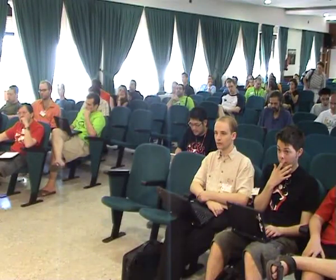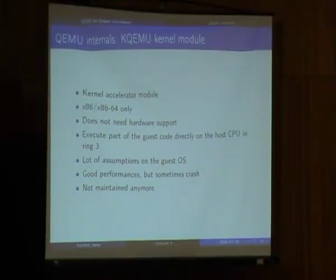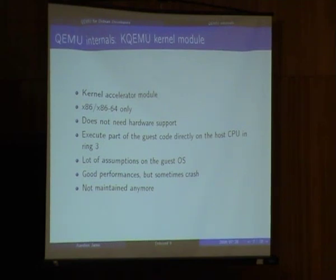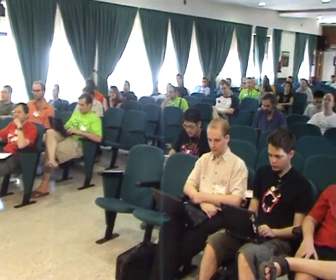There are some helpers to make QEMU run faster. There is the old QEMU kernel module, which runs in the kernel. It only works on x86 and x86_64 and does not need hardware support on your CPU. Instead of translating instructions, it executes parts of the code directly on your CPU in Ring 3, so there is no security issue. However, there are a lot of assumptions made about the guest OS, which means you get good performance but sometimes it may crash. It's mainly tested on Windows and Linux but still shows some strange behavior. It's not maintained anymore, so the module likely doesn't compile on recent kernels.